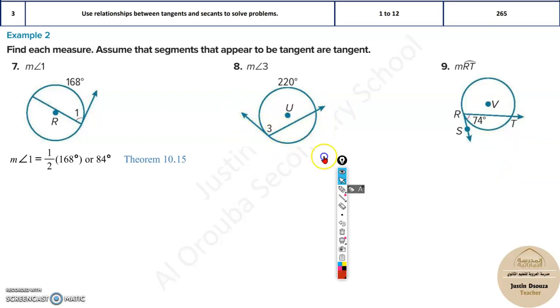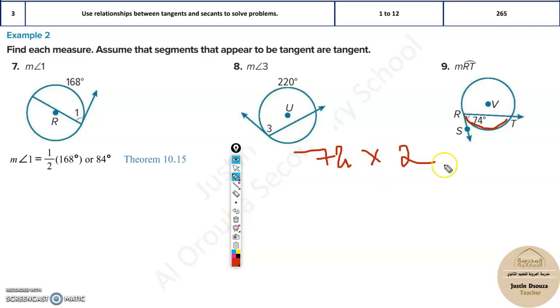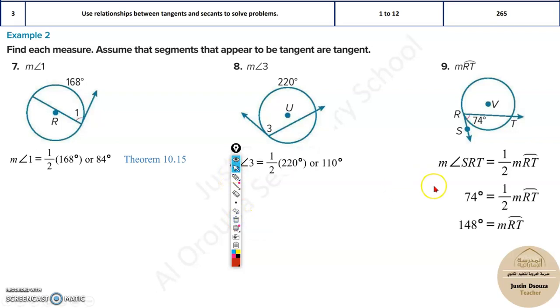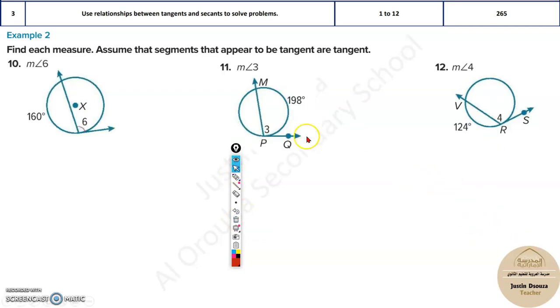They have asked to find the arc RT, whereas they have given this particular angle. Now it's very obvious: you just multiply this by 2 because half of the arc would be this particular angle. Now 74 multiplied by 2 would be the answer. It'll be 148. So that would be the answer, and I hope it is clear.